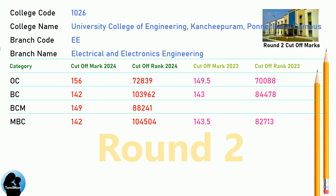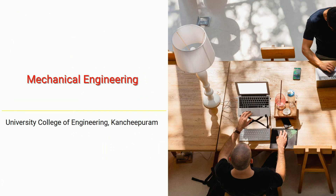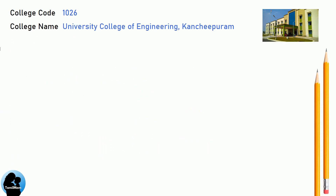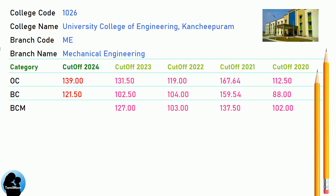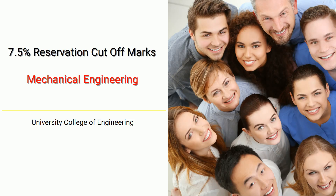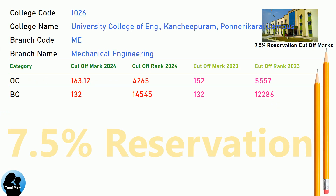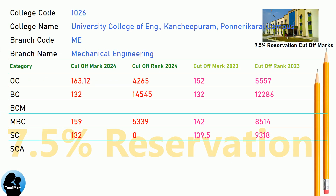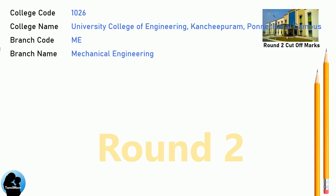DNA Round 1 Cut-Off for University College of Engineering, Kanchipuram in Electronics Engineering. DNA Cut-Off for University College of Engineering, Kanchipuram in Mechanical Engineering. DNA 7.5 Reservation Cut-Off for University College of Engineering, Kanchipuram in Mechanical Engineering. DNA Round Cut-Off for University College of Engineering, Kanchipuram in Mechanical Engineering.